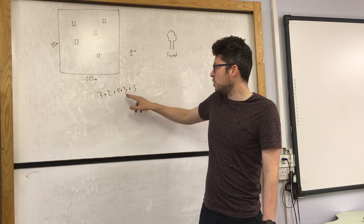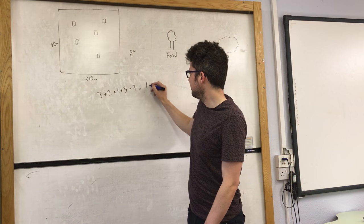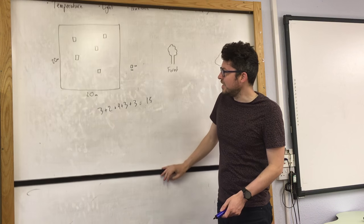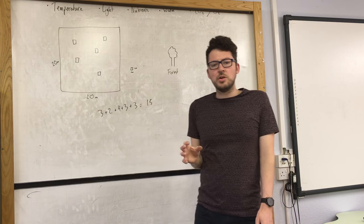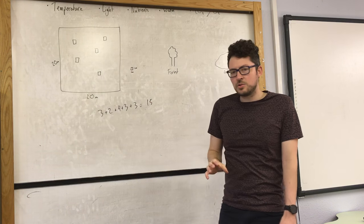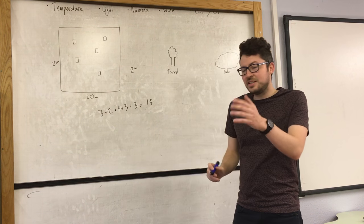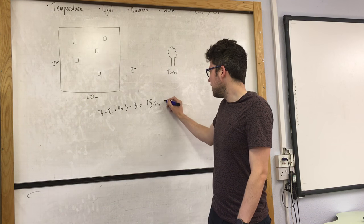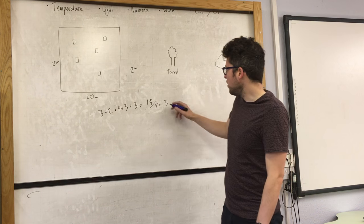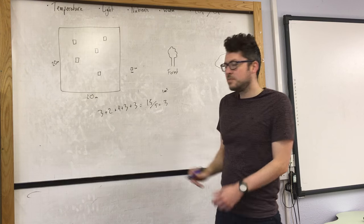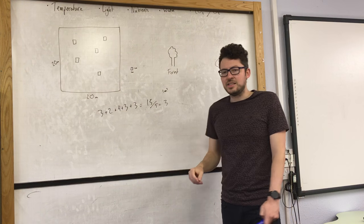So that would give us fifteen. So I've got fifteen daisies in total within my five metres squared. But I'll need to work out how many would be in one. So I simply divide that by five. And that gives me three. So for every one metre squared on this field, there are three daisies.